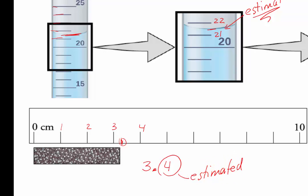So again, going back to significant digits, we have all the certain digits plus one estimated. In this case, 0.4 is estimated.